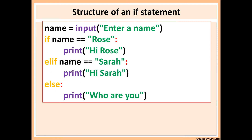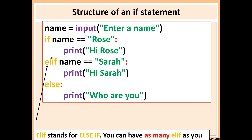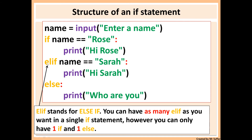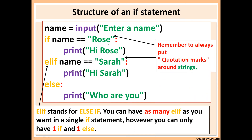If we want to add more names we can use elif. Elif stands for else if. You can have as many elifs as you want inside a single if statement, however you can only have one if and one else. So it could be: if name equals Rose then display 'Hi Rose', elif name is Sarah then 'Hi Sarah', elif name is Sofia then 'Hi Sofia', and so on. We put if at the start and else right at the end. You also need to know about quotation marks — Rose, Sarah, they're all names containing letters, they are strings. With strings we always need to put quotation marks around them. If it was a number we wouldn't need quotation marks.